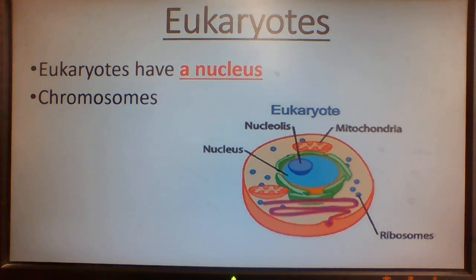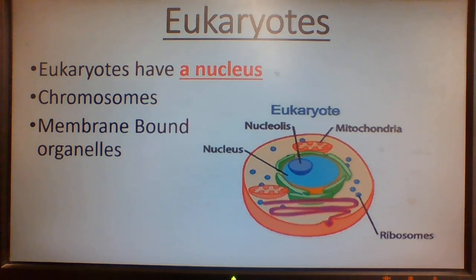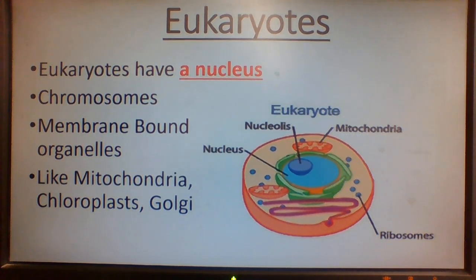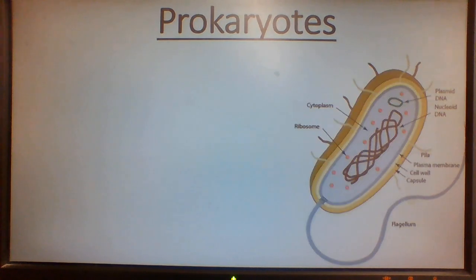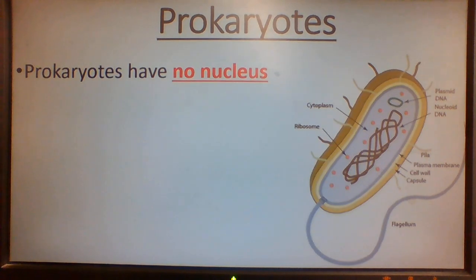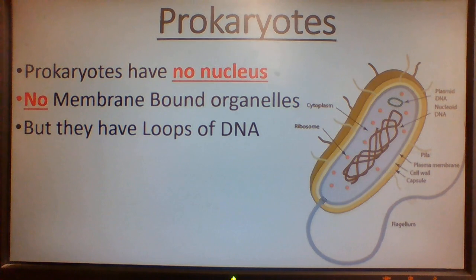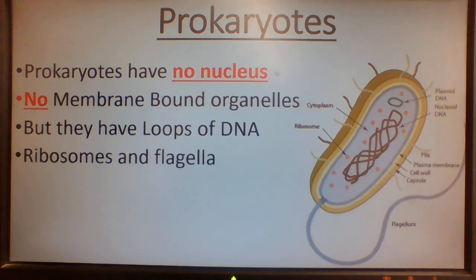Eukaryotes have a nucleus, chromosomes, and membrane-bound organelles like mitochondria, chloroplasts in plants, and Golgi as well. Prokaryotes have no nucleus, no membrane-bound organelles, but they have loops of DNA, ribosomes, and flagella.